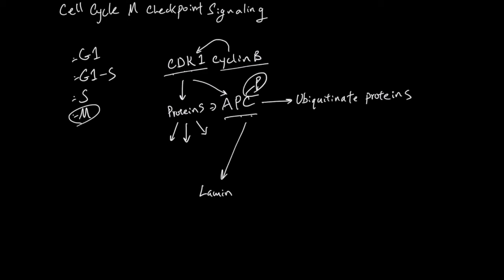The first target is lamin. Lamin is the protein that makes the nuclear envelope, and APC is marking lamin for destruction to make the nuclear material more accessible.